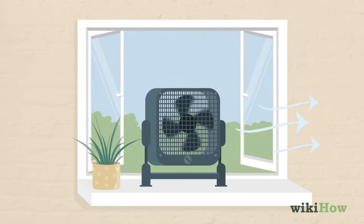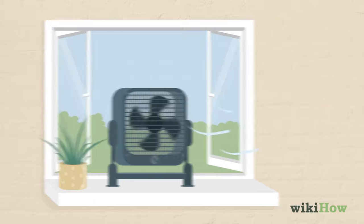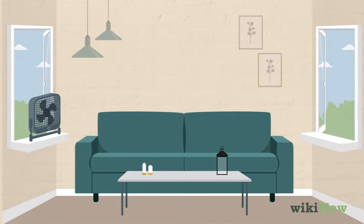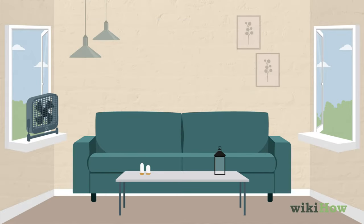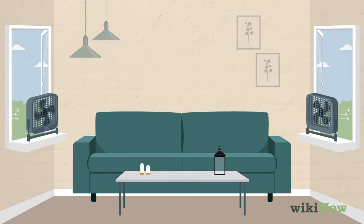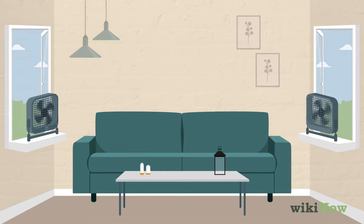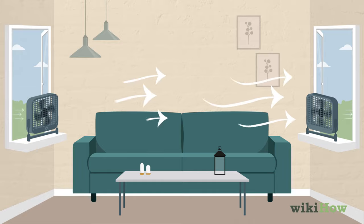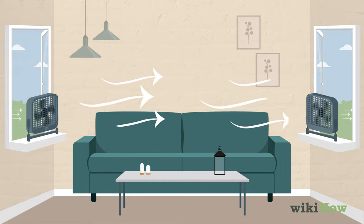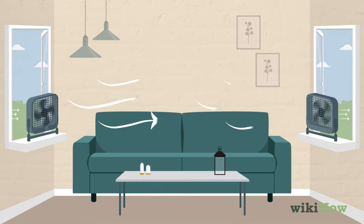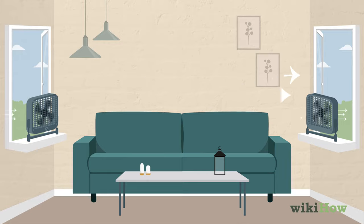To create a cross breeze, place a window-mounted box fan facing inward in one window and another box fan facing outward in a second window across the room. This will draw air through the room and cool it down.